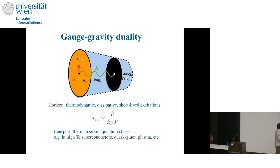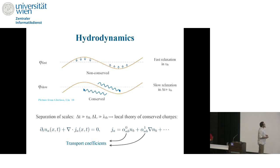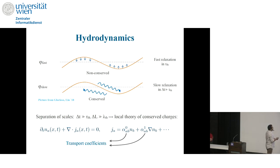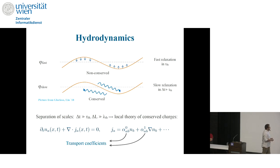Gauge-gravity duality is most useful if you want to study transport, thermalization, quantum chaos, and questions like that in these systems. Now, these strongly correlated systems also often admit a description in terms of hydrodynamics, because of a separation of scales that appears quite generally. On one hand there are these fast-relaxing modes, these Planckian timescale modes. But of course in these systems there are also conserved quantities like energy-momentum, angular momentum, charge, and so on. They cannot change their magnitude at a given space point, so they have to be transported to relax. If you wait long enough, your theory will be effectively described by a local theory of conserved charges — that's nothing else but hydrodynamics.